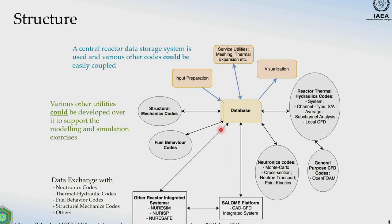To understand the structure: at the heart is the database. The boxes in yellow are already developed or under development, and the boxes in gray are things the user can develop as short interfaces and couple to it. The database can be coupled with any reactor thermal hydraulics code, neutronics, fuel behavior, or structural mechanics codes — the interface just has to be developed. Various utilities can be developed over it to support modeling and simulation, like visualization, meshing, thermal expansion, et cetera. We can also have a utility that directly creates an input deck for a particular code.